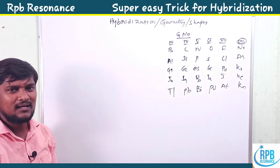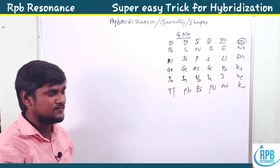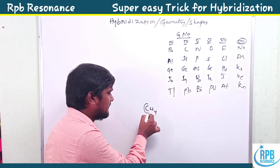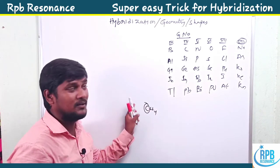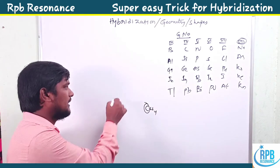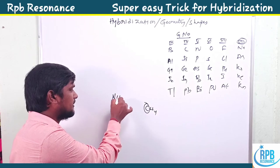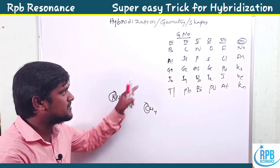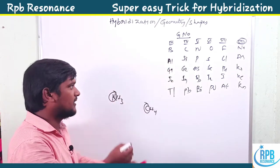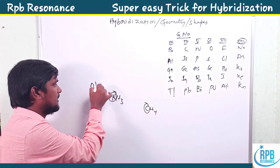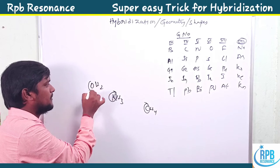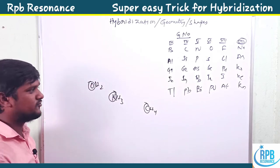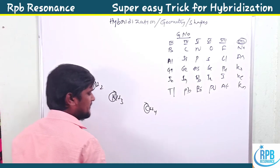For example, given a CH4 molecule, we need the central atom's group number — carbon's group number is four. For NH3, the group number of nitrogen is five. For water, the group number of oxygen is six. These are the basic things we need to find hybridization and shapes of any molecule.